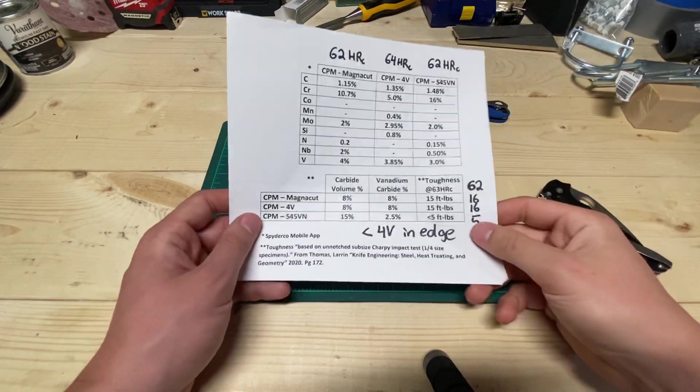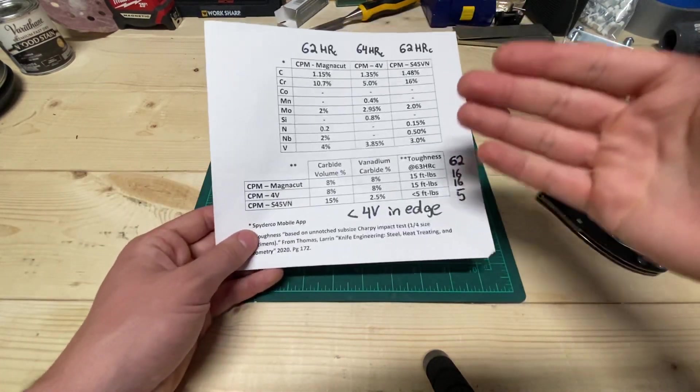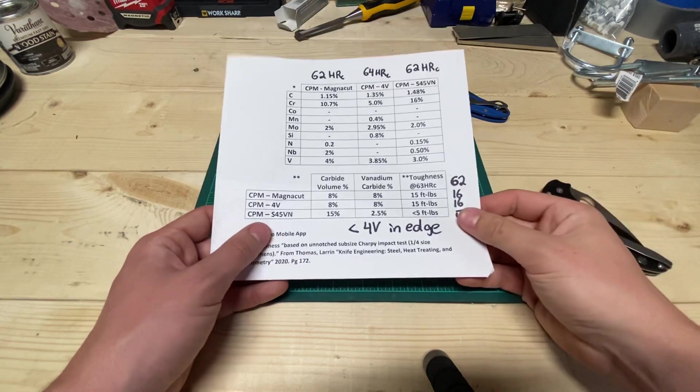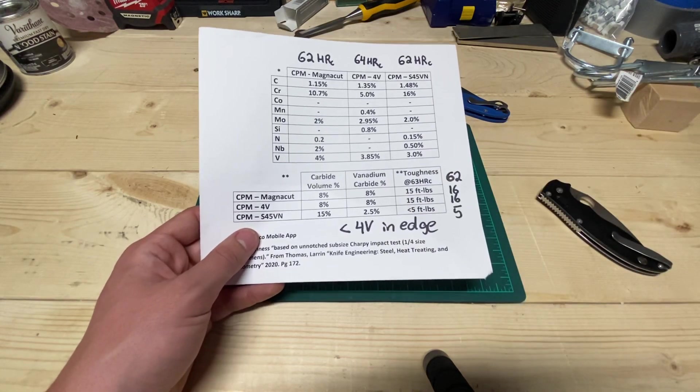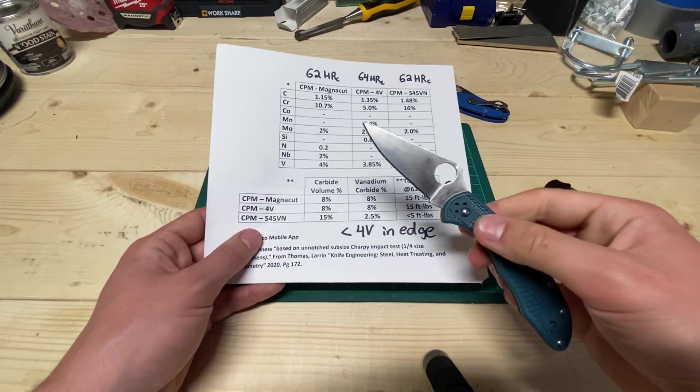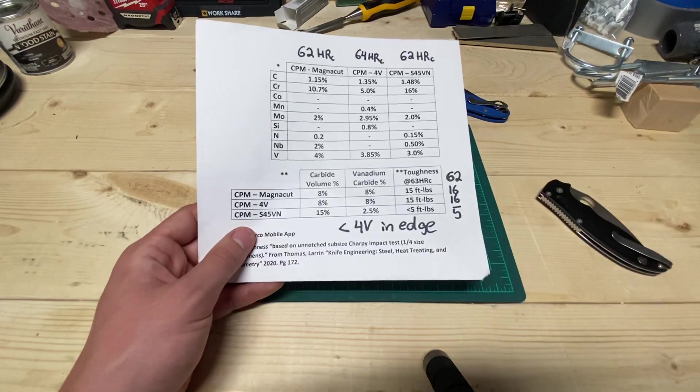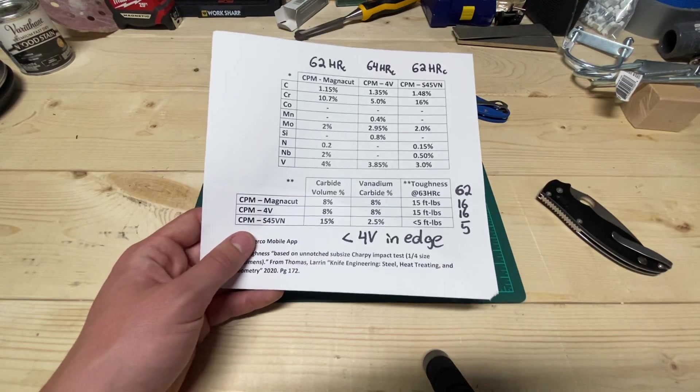But generally speaking, that's what I would say. If you want edge retention 4V and up, then MagnaCut's not going to be the ticket. If you want edge retention 4V and up, you should just go straight to K390 or 10V. And if you want to go past that, then go to 15V. But it's really great. It's the whole package.